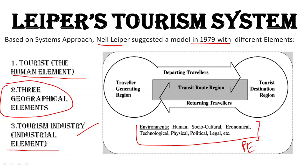These external factors are often referred to using the acronym PESTEL — Political, Economic, Sociocultural, Technological, Environmental, and Legal. Political relationships between countries can affect travel. Physical conditions like earthquakes or floods, technological advancements, and economic conditions such as currency exchange rates or low discretionary income — all of these affect travel behavior and were included in Leiper's system.